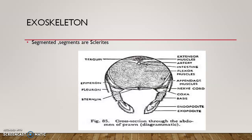The dorsal sclerite — the uppermost region — is called the tergum. The ventral region's sclerite is called the sternite.